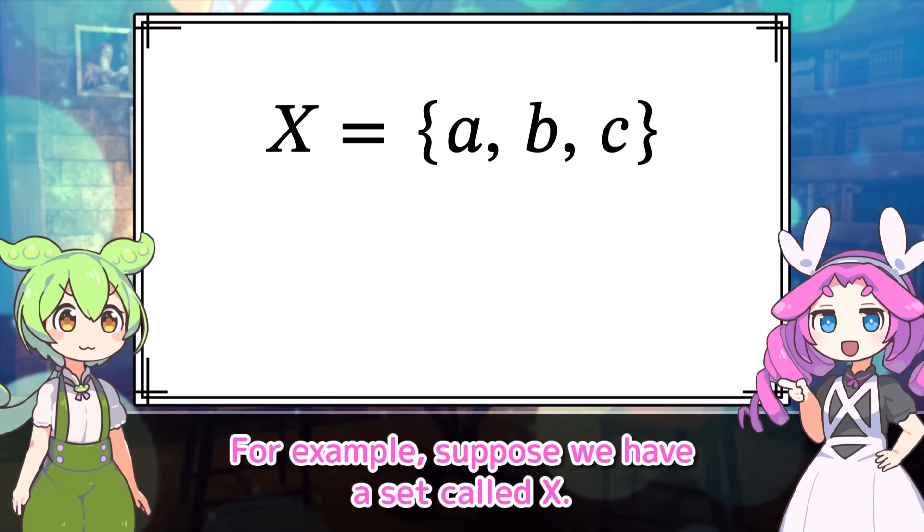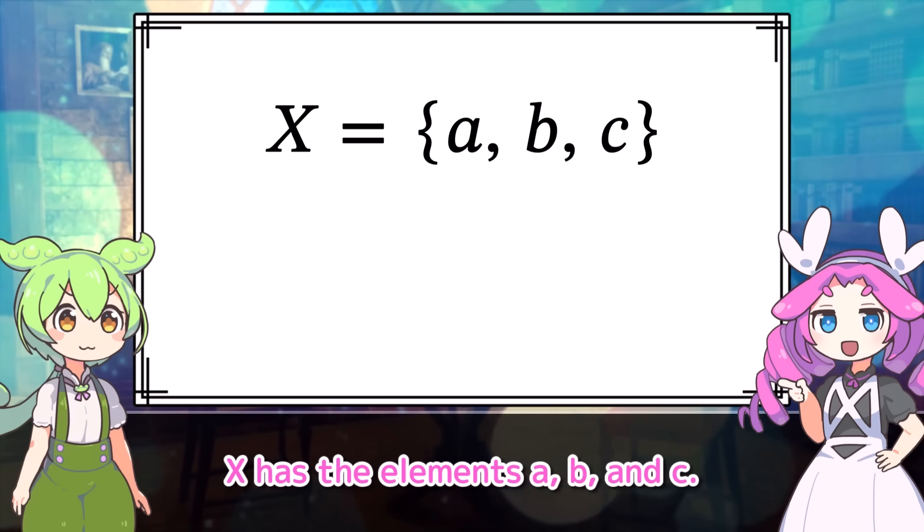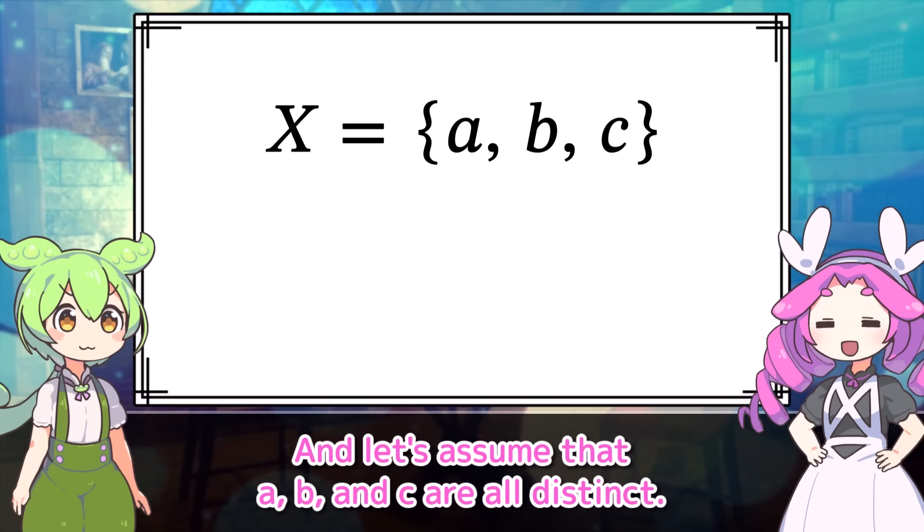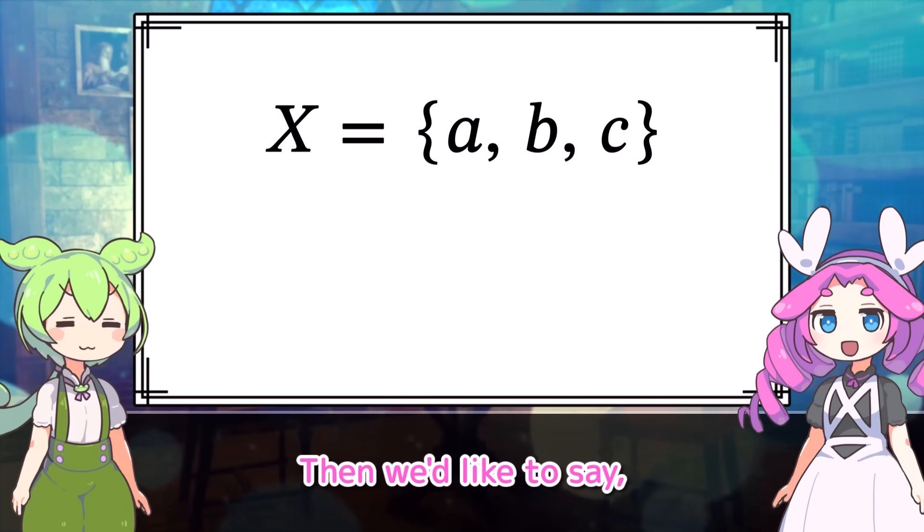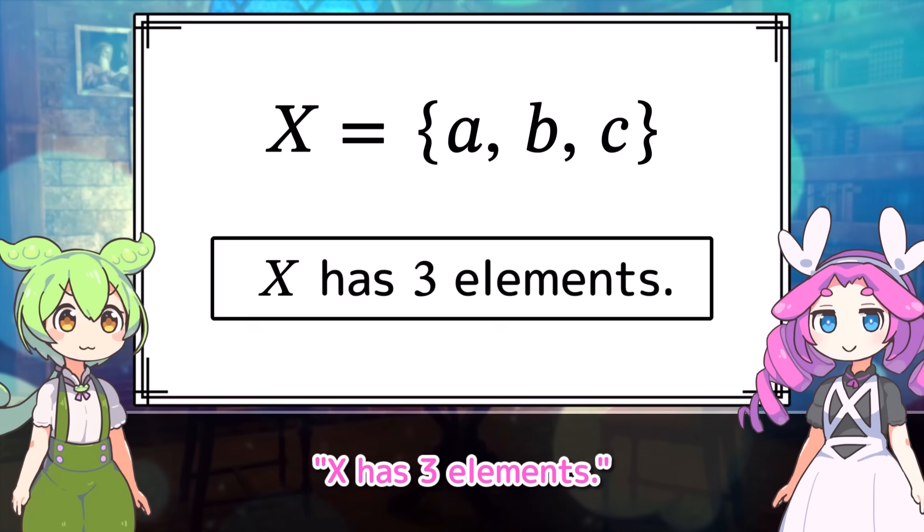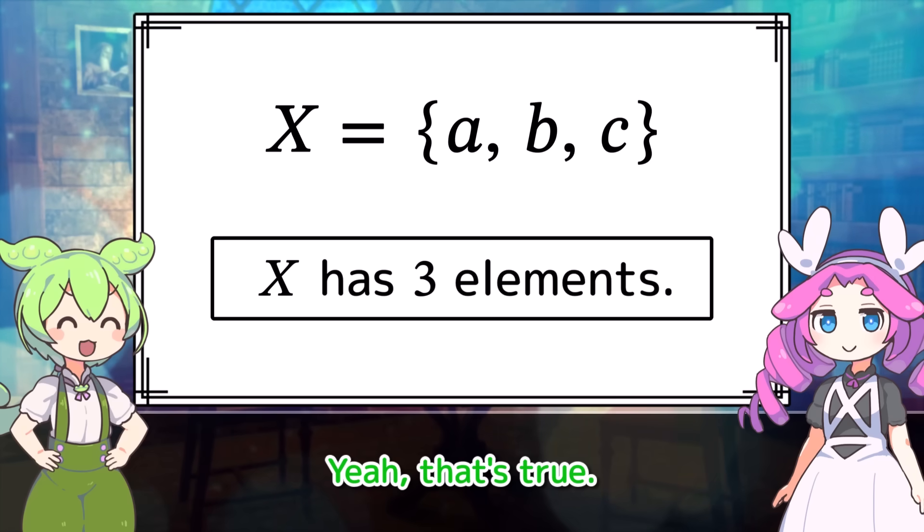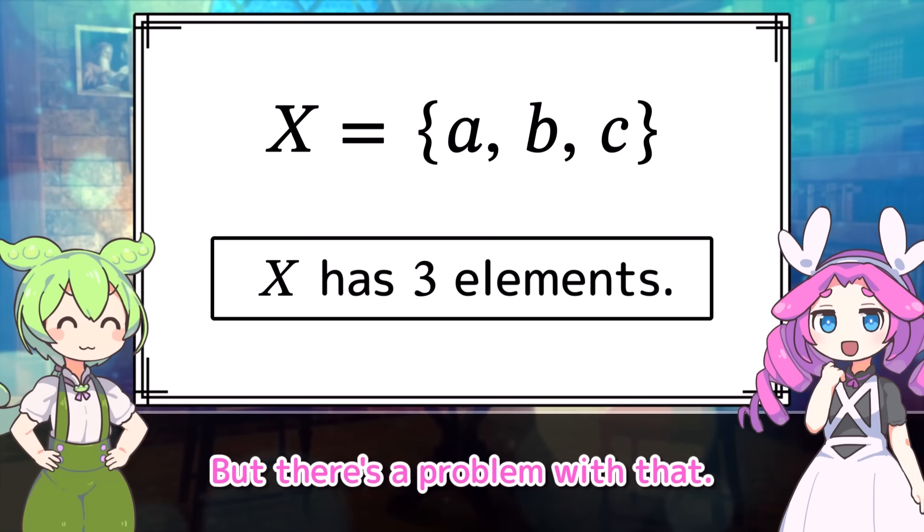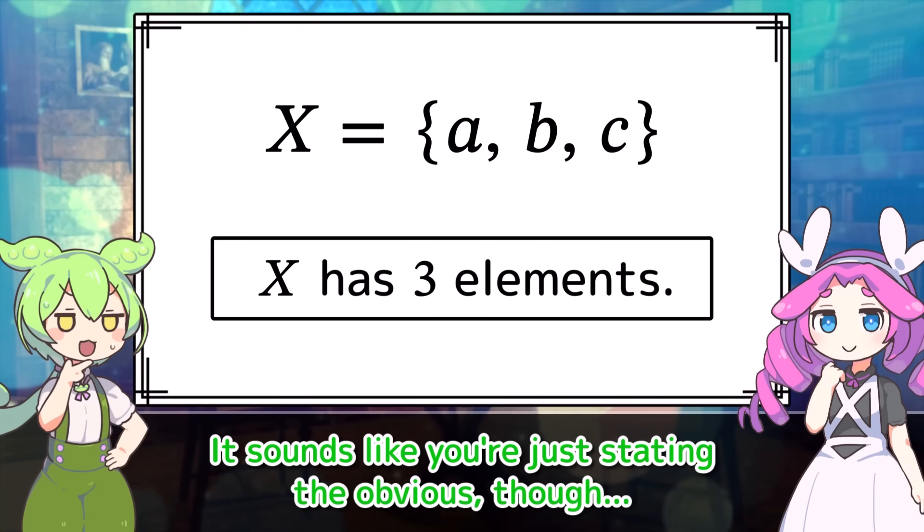What do you mean? For example, suppose we have a set called X. X has the elements a, b, and c. And let's assume that a, b, and c are all distinct. Then we'd like to say, X has three elements. Yeah, that's true. But there's a problem with that. Why? It sounds like you're just stating the obvious, though.